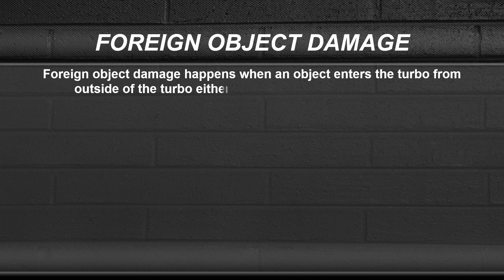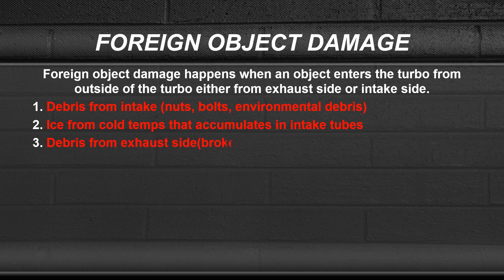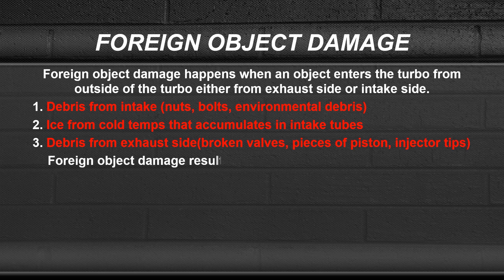Next is foreign object damage. This happens when an object enters the turbo from outside, either from the exhaust side or the intake side. This could be debris from the intake such as nuts and bolts, environmental debris, or ice from cold temperatures that accumulates in intake tubes. It can also be debris from the exhaust side, such as broken valves, pieces of piston, and injector tips. Foreign object damage results in damaged compressor and exhaust wheels, turbine housing damage, and wheel shaft breakage.